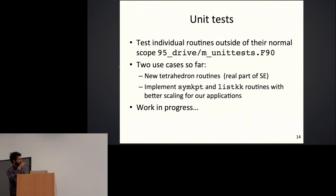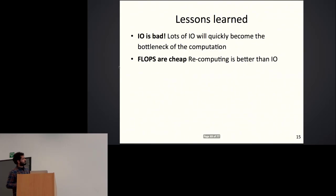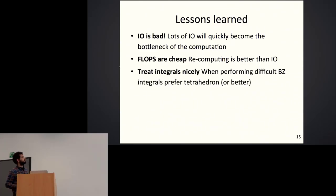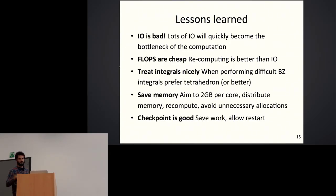We also implemented unit tests. Testing the tetrahedron routines was better done with a module outside the main code. We found that K point mapping routines are slow for the grid sizes we use — this is work in progress. Lessons learned along the way: avoid I/O, recompute quantities where possible, use good integration methods such as the tetrahedron method for Brillouin zone integrals, save memory, and implement checkpointing for calculations.